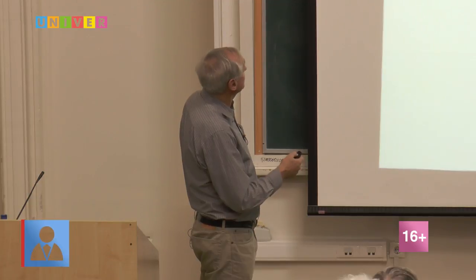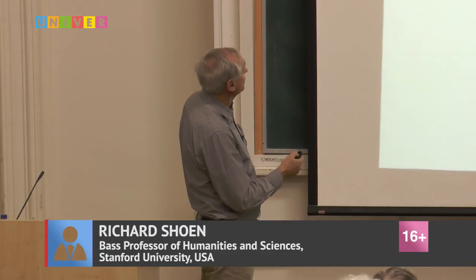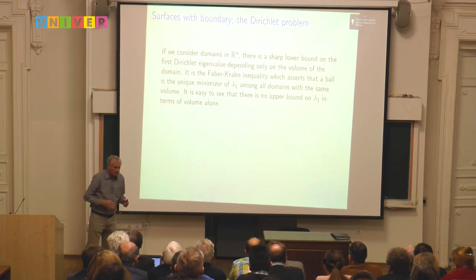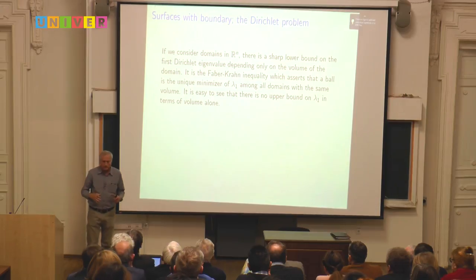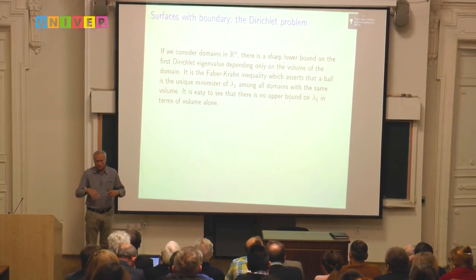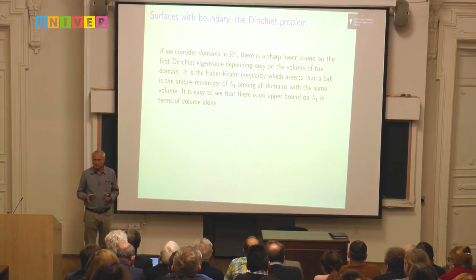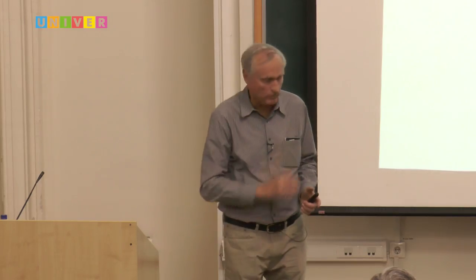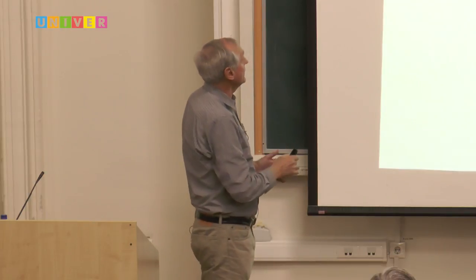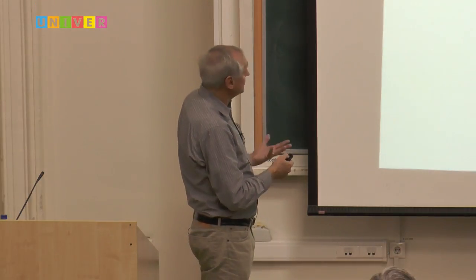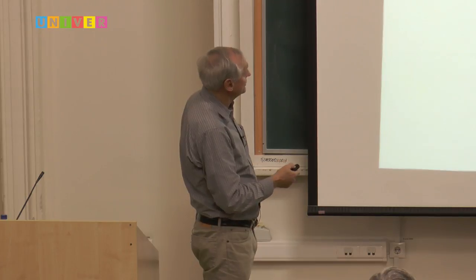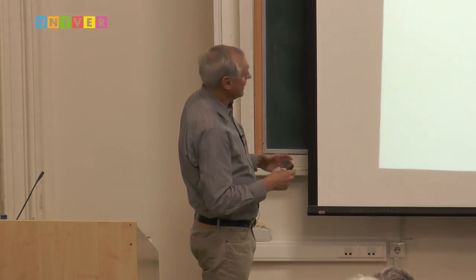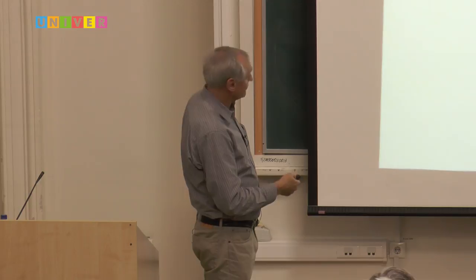There is a classical theorem called the Faber-Krahn inequality, which holds for domains in R^n. It asserts that among all domains in R^n with a fixed volume, the ball with that volume has the lowest Dirichlet eigenvalue. This is an example of an extremal problem, and the minimum is uniquely achieved by the round ball.